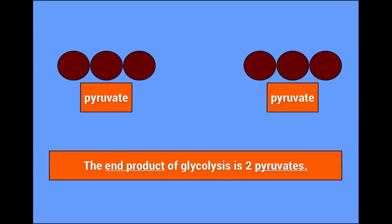And at the end of glycolysis are two little things known as pyruvates. The end product of glycolysis is two pyruvates.